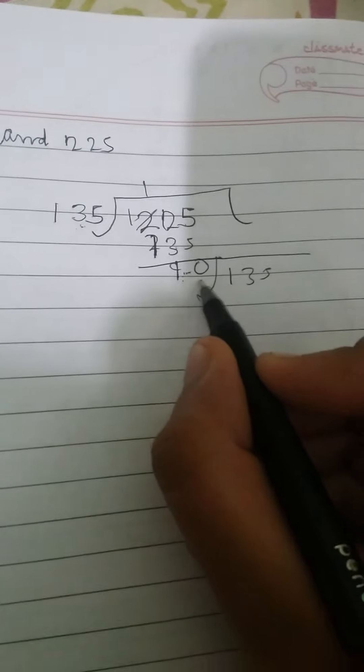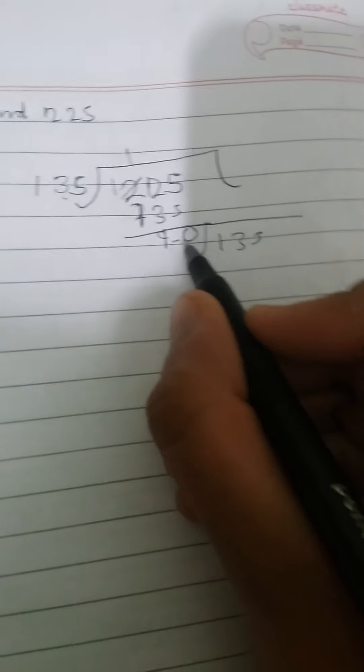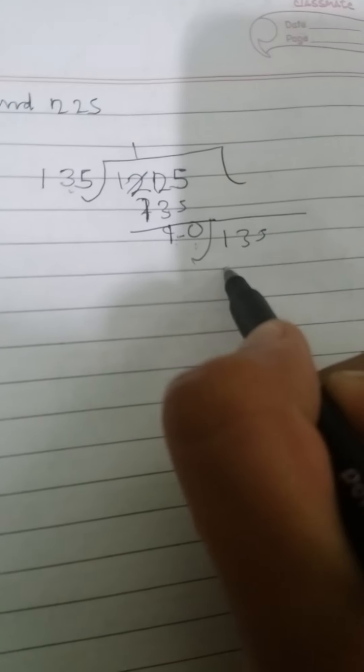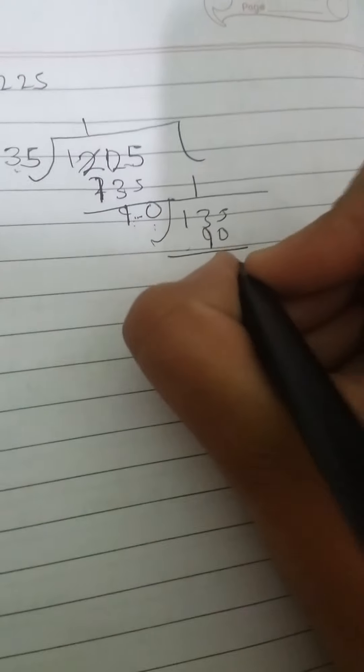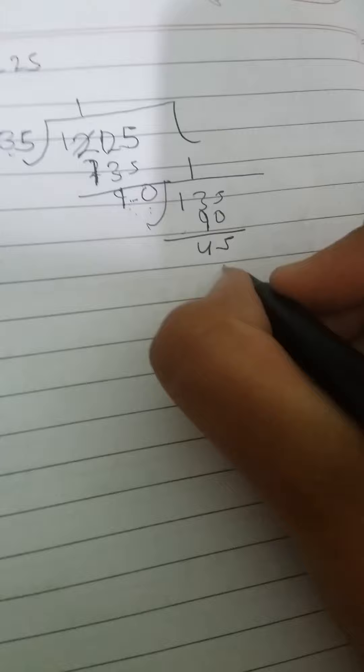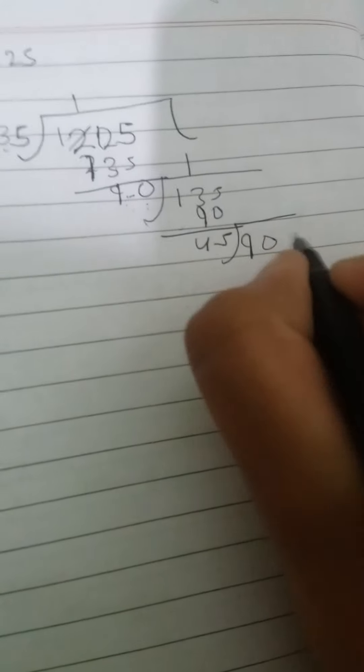When there's a remainder, we make the remainder the divisor and the first divisor becomes the dividend. So 135 divided by 90. 90 once is 90, remainder is 45. Now 90 comes as the dividend, so 90 divided by 45 gives us 2.